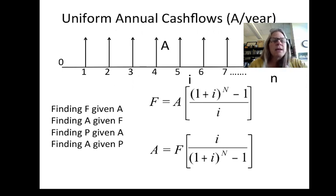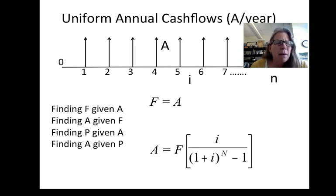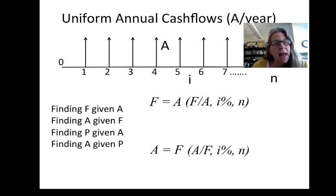When we look at this, remember if you look at uniform annual cash flow, we had these equations where F is equal to A times (1 plus i) to the n minus 1 over i, etc. But what we do is instead of having these calculations available, we get rid of that part of it and put in this factor where this tells us, look up F given A, i percent for n time periods. And for the other one is find A given F, i percent for n time periods. We'll do the same thing with the P values and look them up in a table.